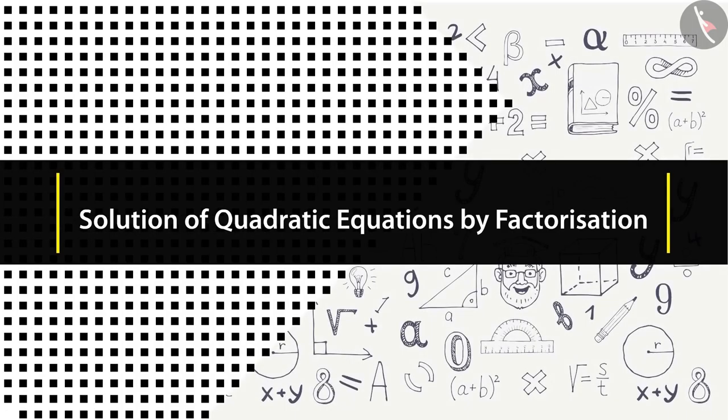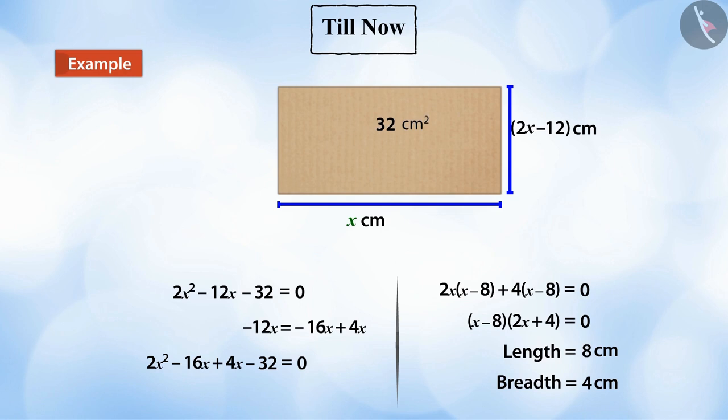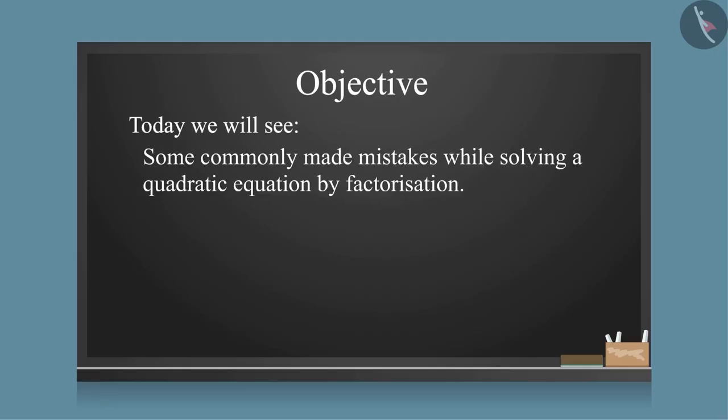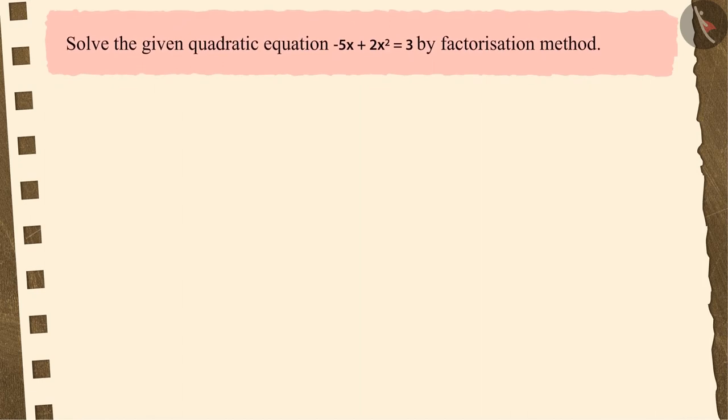Welcome to this video. In the previous video, you saw an example based on solving quadratic equations by factorization. Now we will look at some commonly made mistakes while solving a quadratic equation by factorization. Solve the given quadratic equation: -5x + 2x² = 3 by factorization method. Pause the video and solve this question.